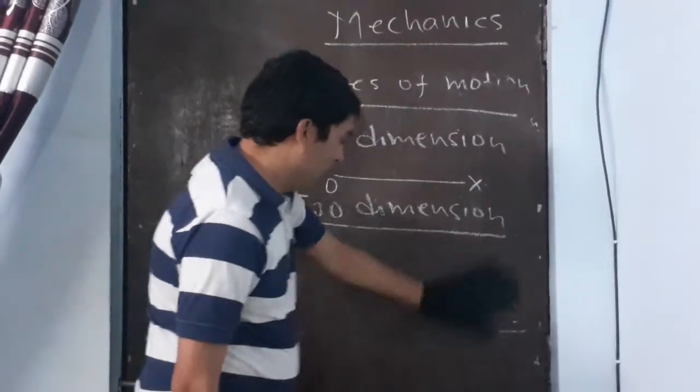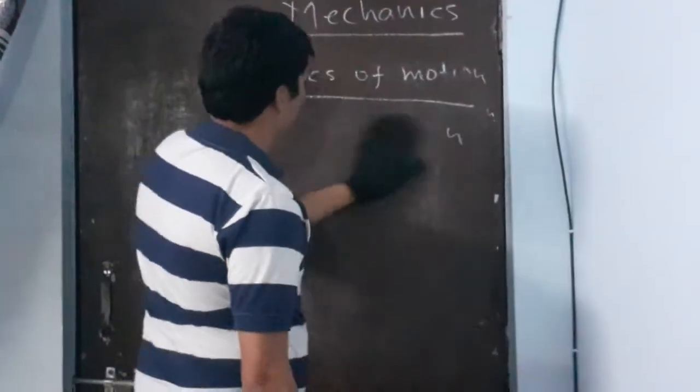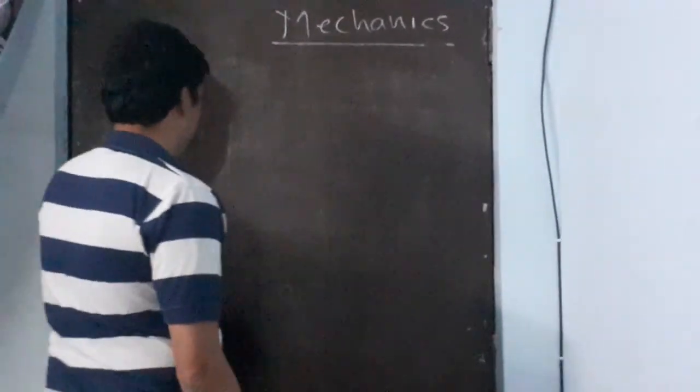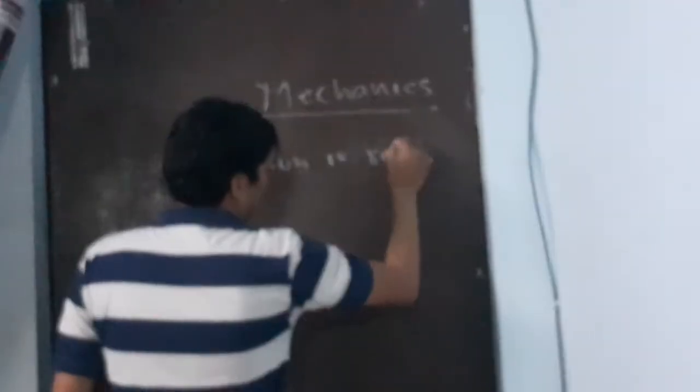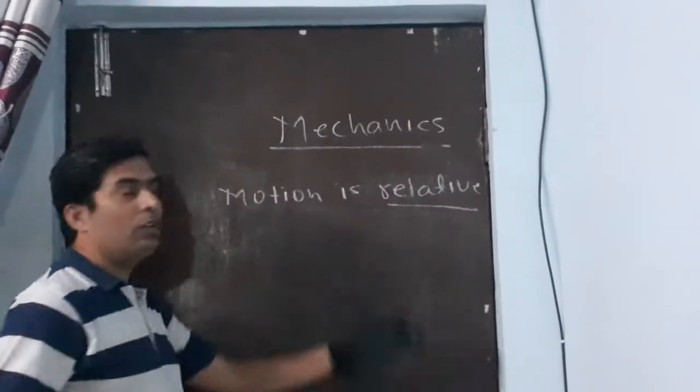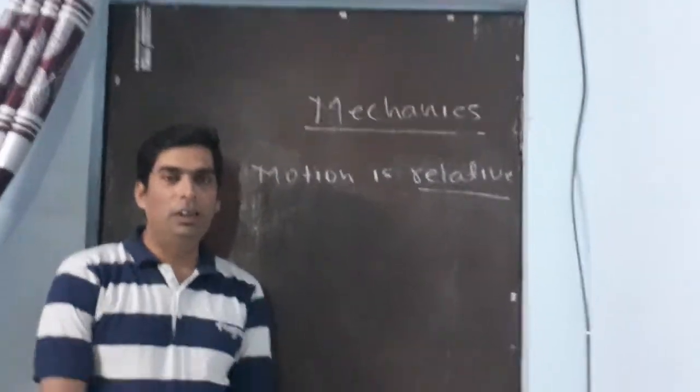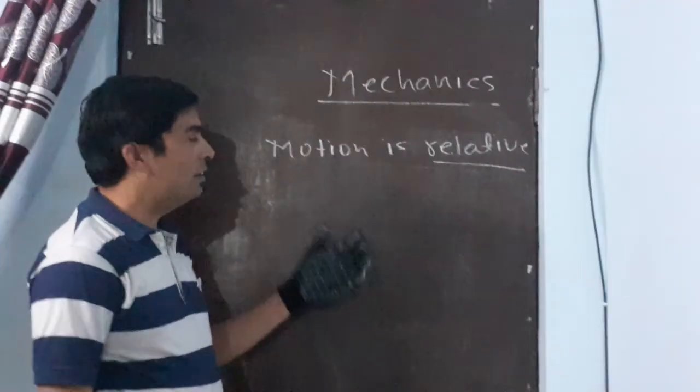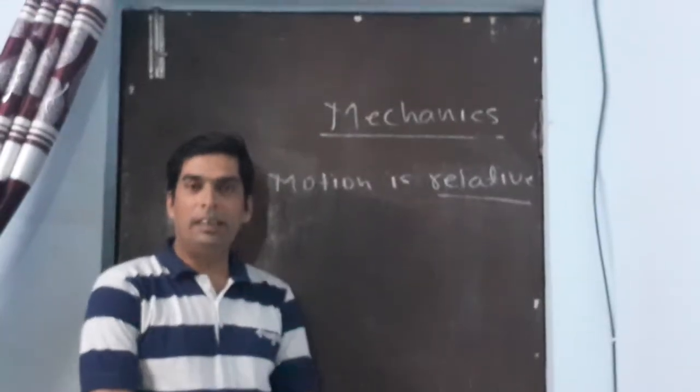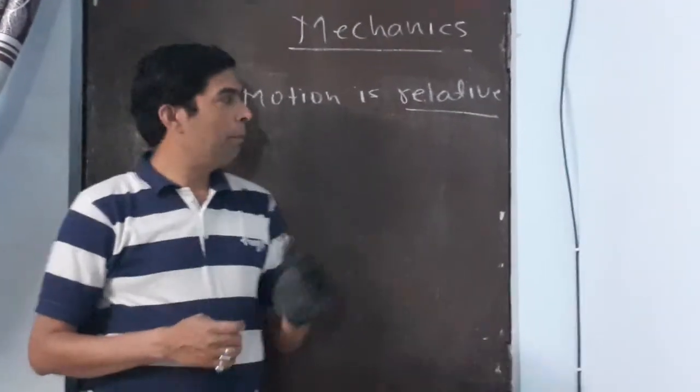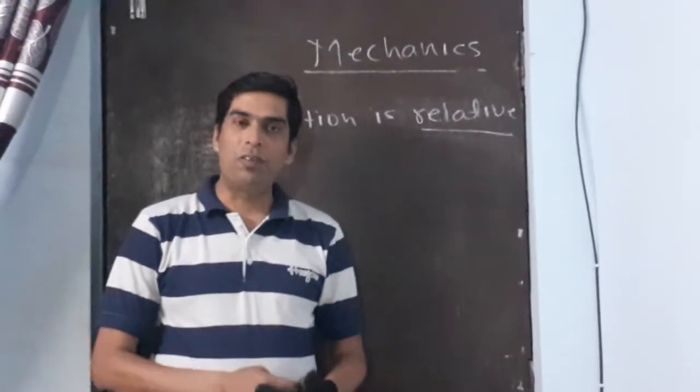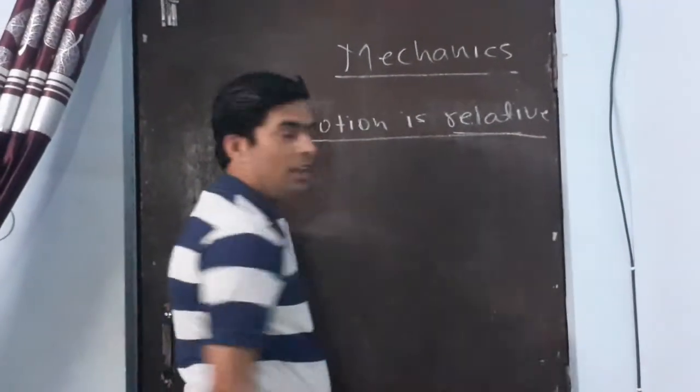Now we will move to the next topic, and that is that motion is relative. Relative means we are comparing the motion of the body with respect to other components. Just like two persons sitting in a compartment of a moving train. They are at rest with each other, but they are in motion with respect to somebody who is visualizing them from outside. So the persons on the train are at rest with each other, but the same persons are in motion with respect to somebody outside the train. That is why we can say motion is relative.